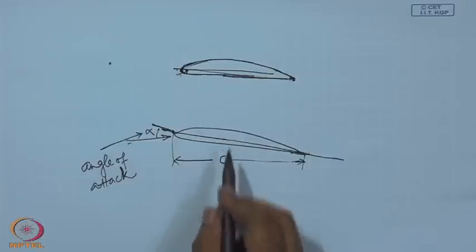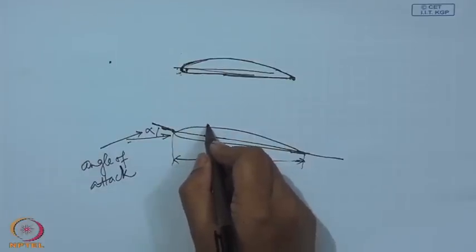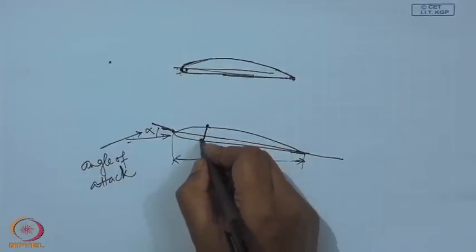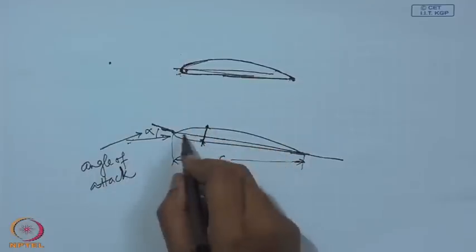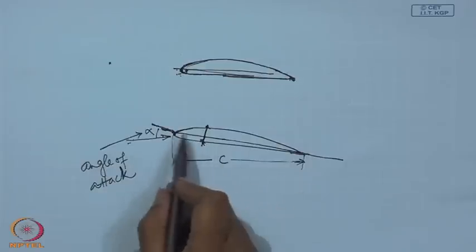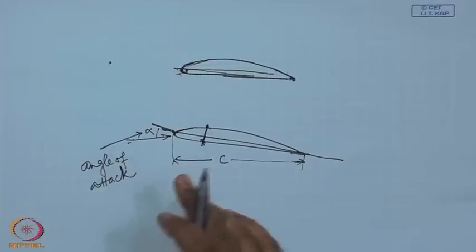Once we have the chord, if at any point on the chord we draw a perpendicular, it will intersect the two surfaces at two different points, and this distance is called the thickness. The thickness at the leading edge is quite small; it increases as we move toward the trailing edge, reaches a maximum value, and then decreases to nearly zero. The maximum thickness point is usually somewhere between 25 to 50 percent of the chord, typically around 35 to 40 percent, for most airfoils used as wing cross sections.